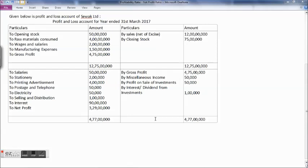Then we have by miscellaneous income 50,000, by profit on sale of investment 50,000, by interest and dividend from investment 1 lakh. So the total of the credit side of profit and loss account is 4 crores 77 lakhs.